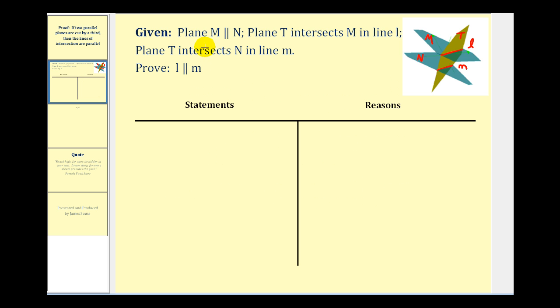So what we have here is two parallel planes, M and N, and plane T cuts both M and N. The intersection of T and M is line L, and the intersection of T and N is line m.